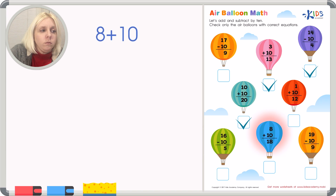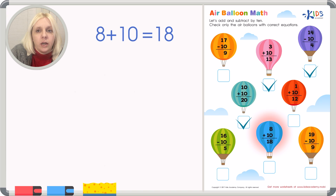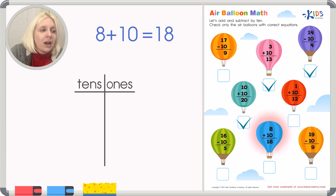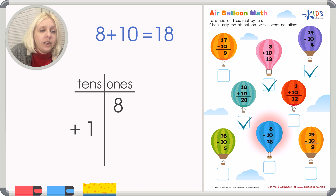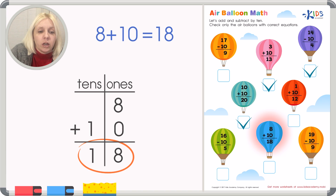Next balloon: 8 plus 10 equals 18. You may notice a pattern — when we add a number to 10, that number reappears in the ones place of the answer. Let's confirm with the T-chart: eight goes in the ones column, 10 gives us one ten and zero ones. Eight plus zero is eight; one plus nothing is one. The answer is 18 — that is correct, so we put a check.